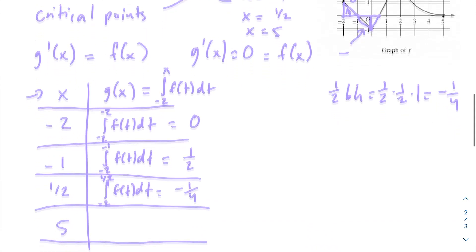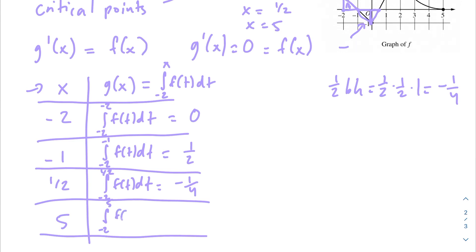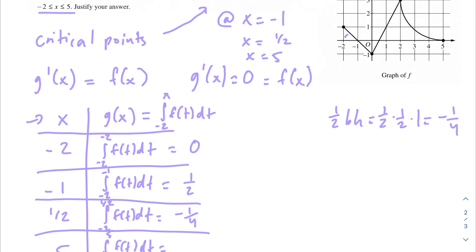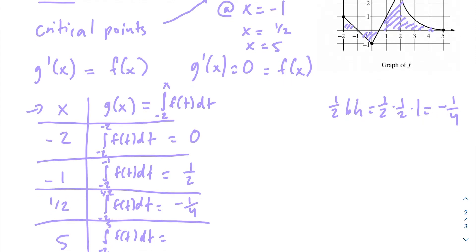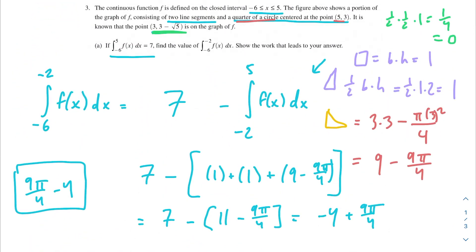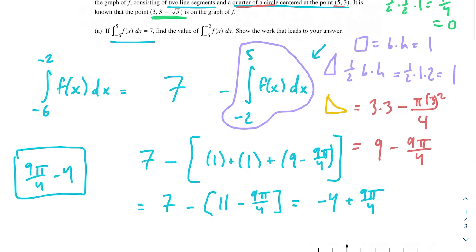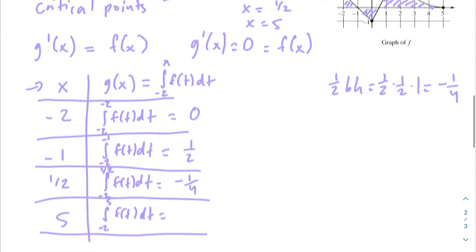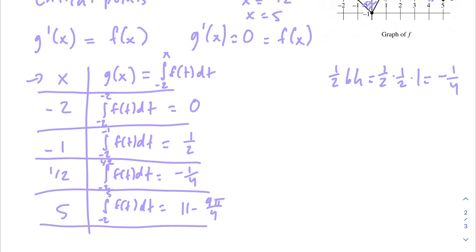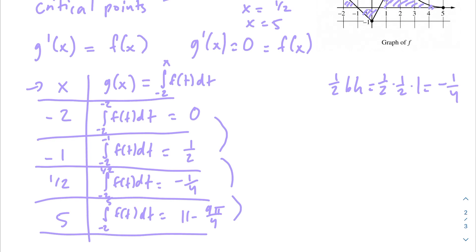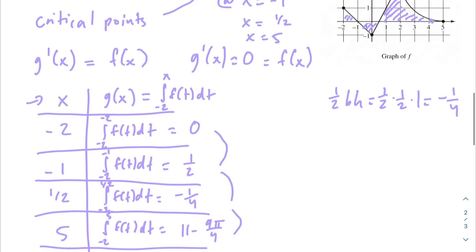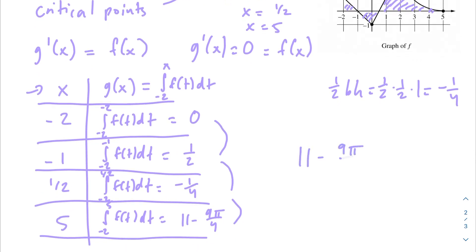For g(5): integral from −2 to 5 of f(t) dt. This looks familiar — we actually solved for it in Part A. We found the area from −2 to 5 was 11 minus 9π/4. Comparing all values: g(−2) = 0, g(−1) = 1/2, g(1/2) = −1/4, g(5) = 11 − 9π/4. The absolute maximum value of g is 11 − 9π/4, because this value is greater than all the others.